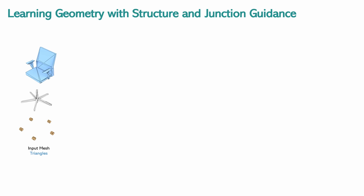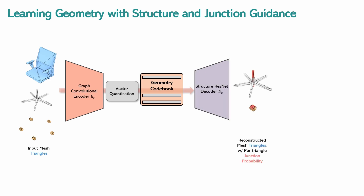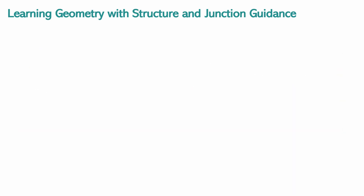The mesh triangle features are encoded using a graph convolutional encoder, quantized at the bottleneck, and decoded by a ResNet decoder. Along with triangle coordinates, the decoder predicts a junction probability, indicating the likelihood of a triangle being near other parts. Junction triangles, which connect different parts, are crucial for ensuring synthesis of a coherent overall shape.